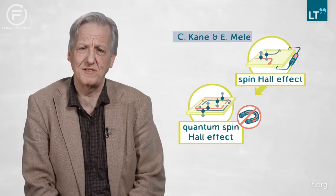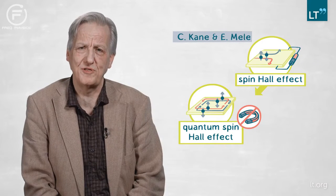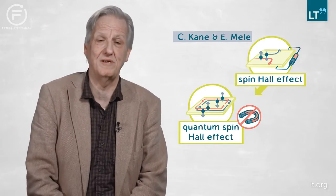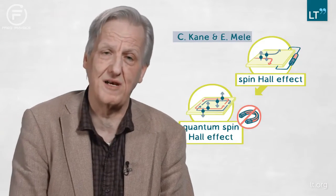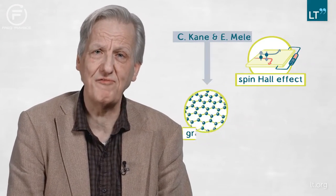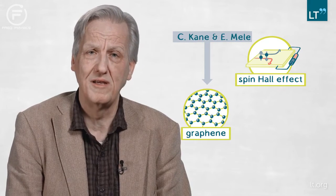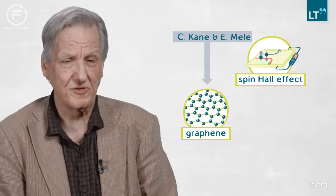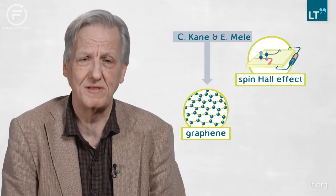The question really was: how do you do such an experiment and what is the right material to use? The suggestion of Kane and Mele at that time was to use graphene, but graphene with an artificially high spin-orbit coupling of next-nearest-neighbor type, which was not very physical.